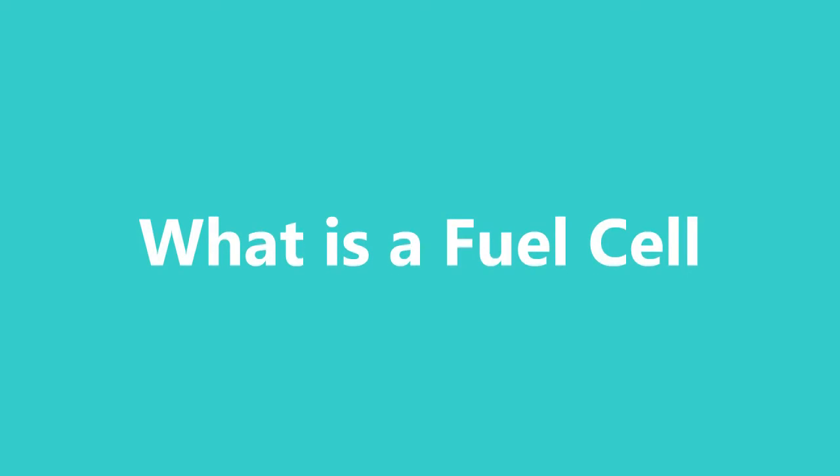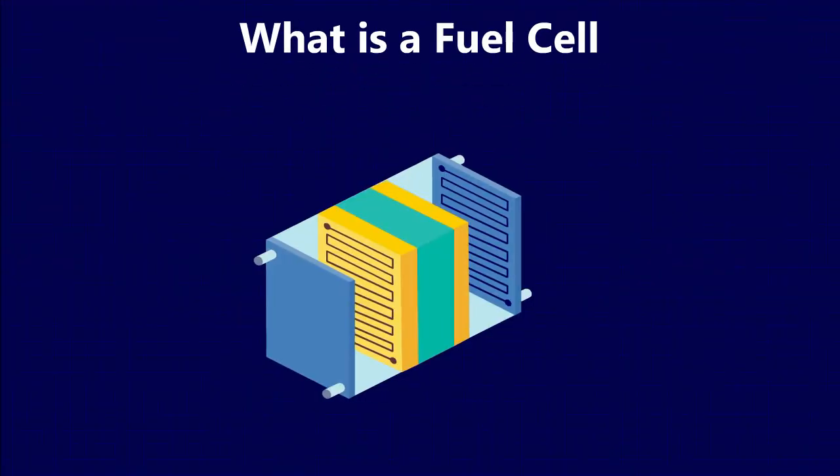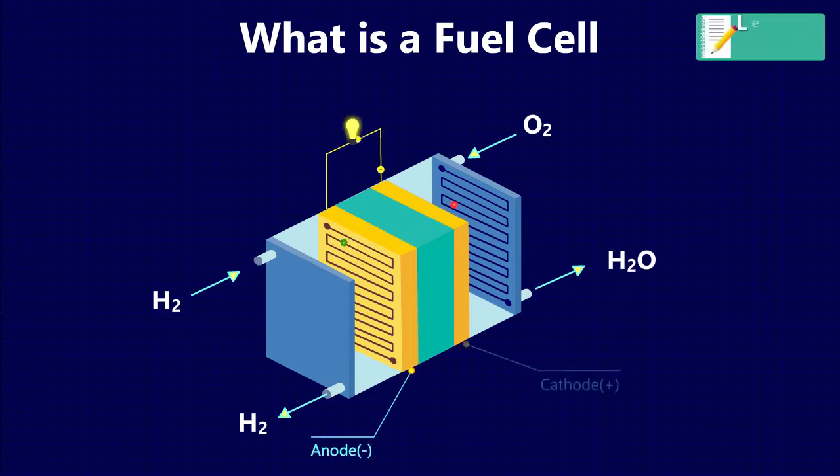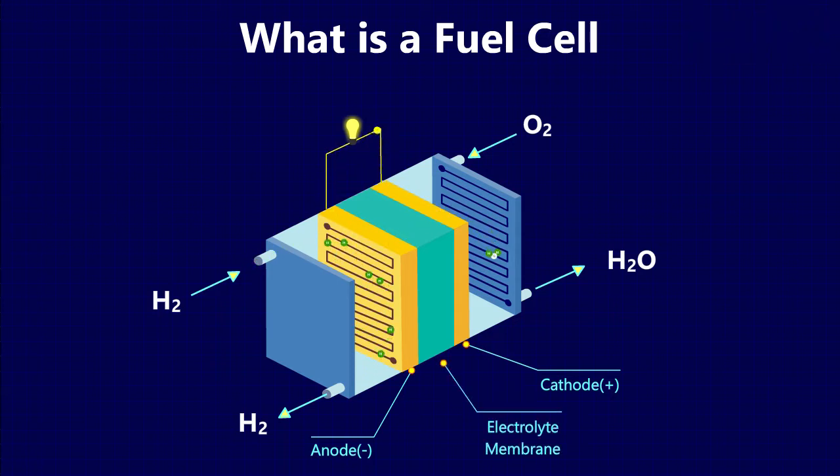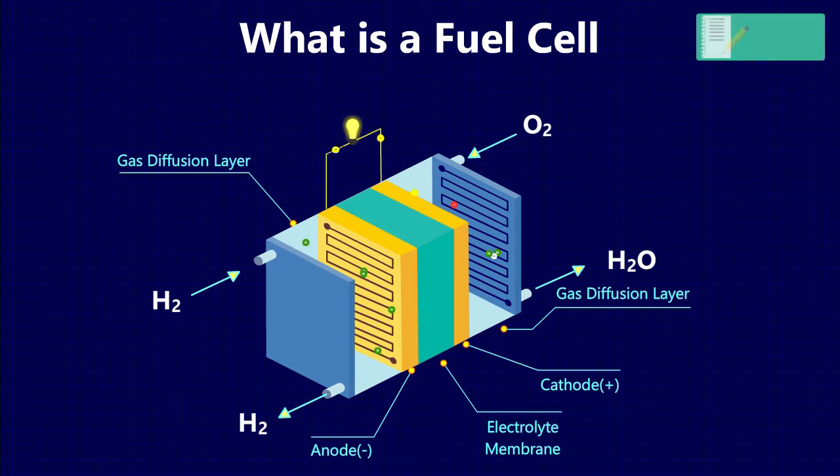What is a fuel cell? A fuel cell is a device that generates electricity by a chemical reaction. Every fuel cell has two electrodes called the anode and cathode. The reactions that produce electricity take place at the electrodes. Every fuel cell also has an electrolyte which carries electrically charged particles from one electrode to the other, and a catalyst which speeds the reactions at the electrodes.